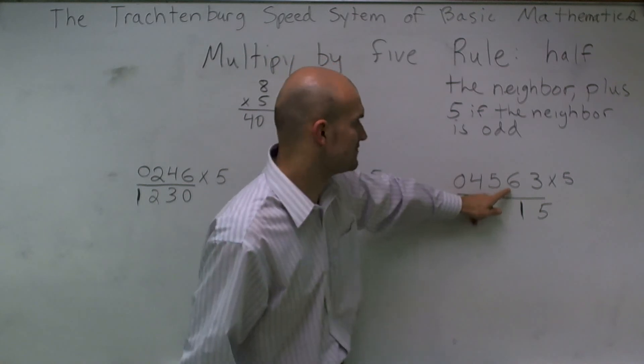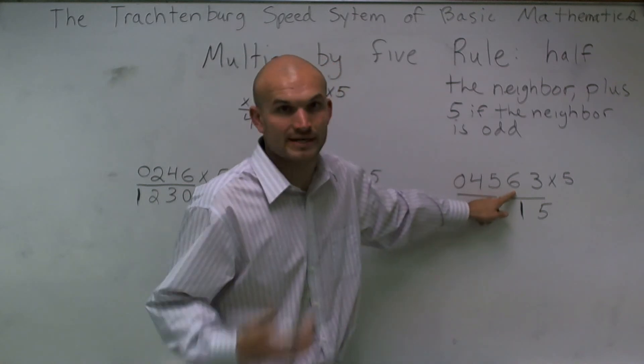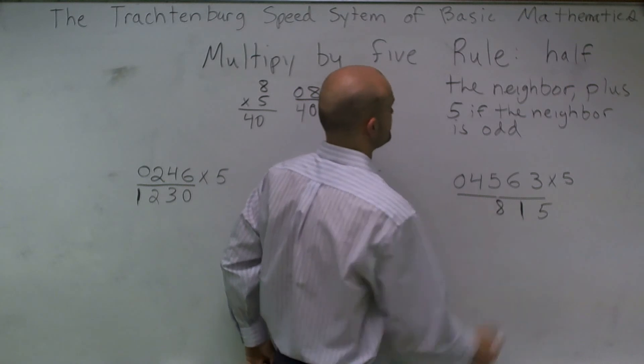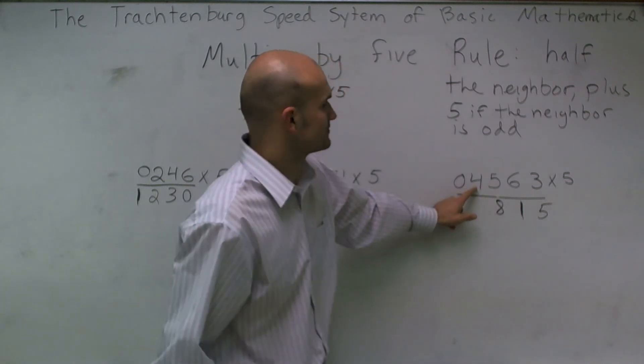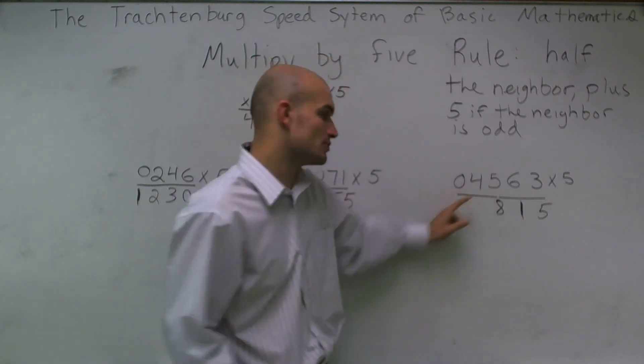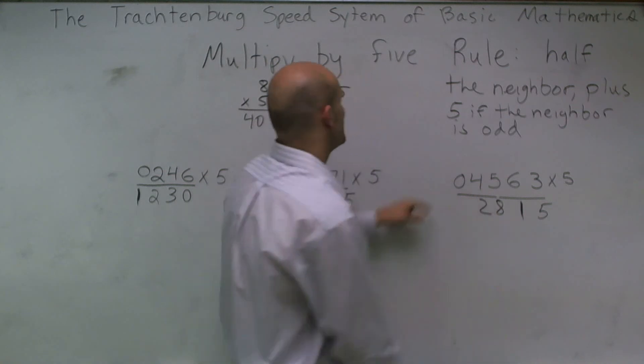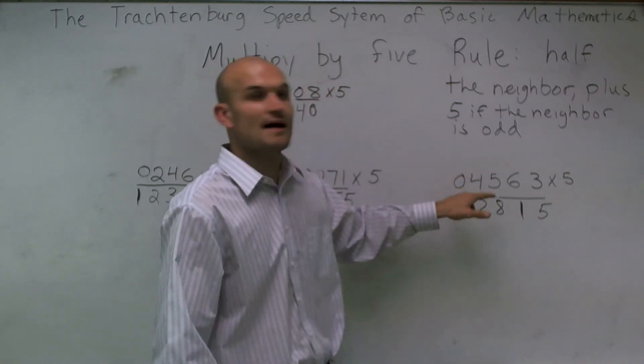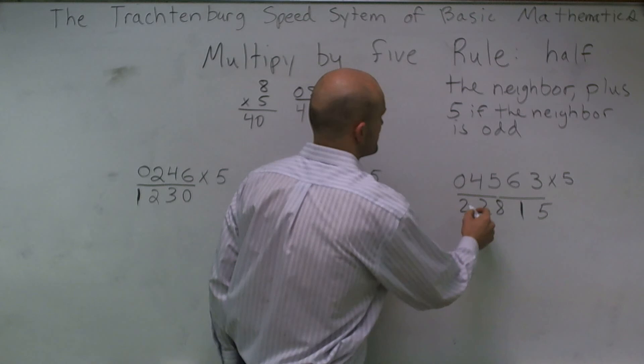So I looked at 5. The neighbor is 6. Half of 6 is 3. Remember, I had to add 5, so I'll have 8. I go to 4, half of 5, which is 2. Then I go to 0. Half of 4 is going to be 2.